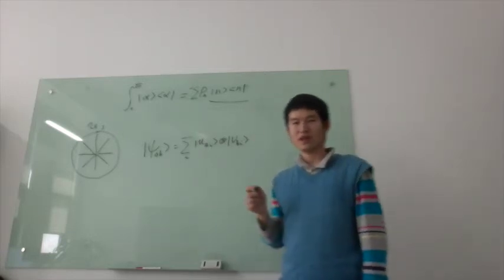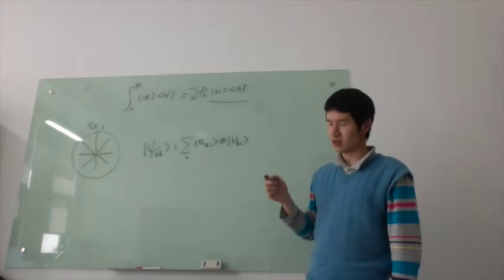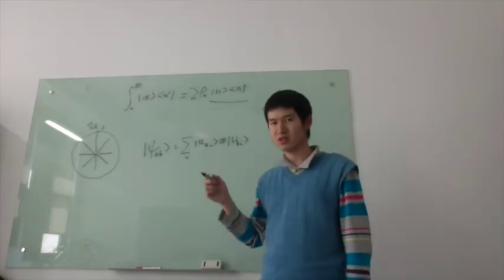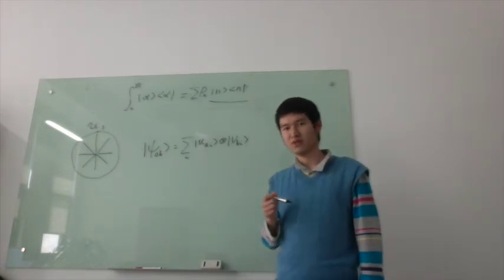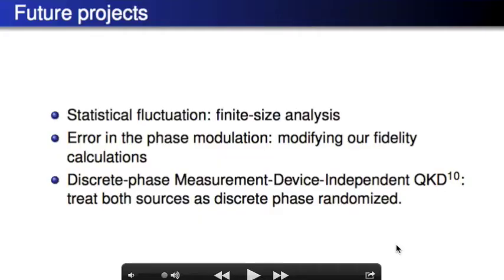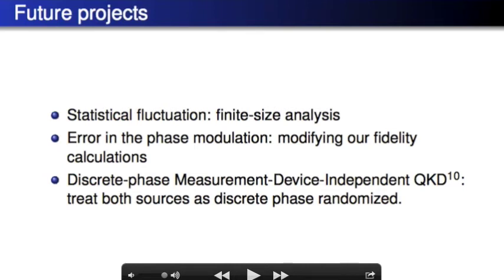Then, we analyze the QKD protocol with such kind of sources, and show that with only a small number of discrete phases, we achieve similar performance to the continuous one. As future projects, one could consider more imperfections in the source, and also apply our analysis to MDI-QKD protocols.